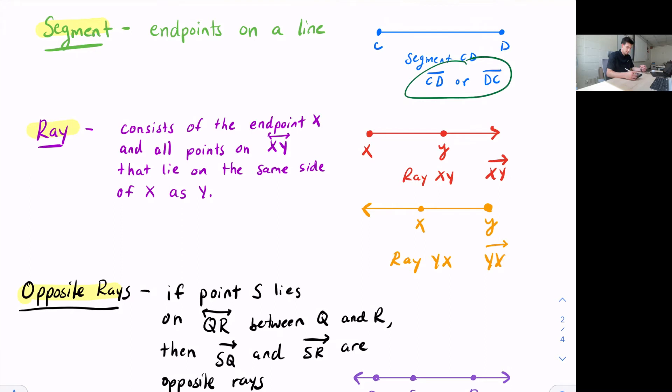A ray consists of the endpoint, in this case the endpoint X, and all points on Line XY that lie on the same side of X as Y. So to kind of summarize that, a ray has an endpoint on one side and it extends forever in the other direction. So here we have ray XY and here we have ray YX. We name it by the endpoint first and then the other point on the line that extends in that direction.